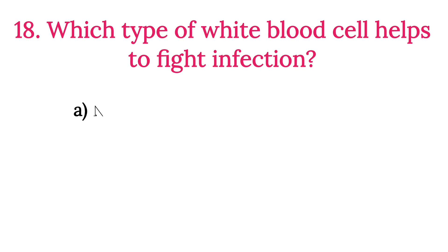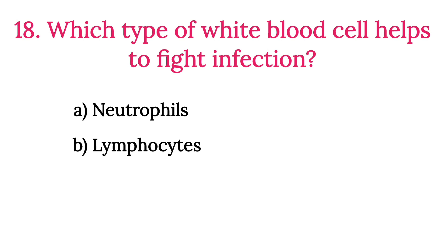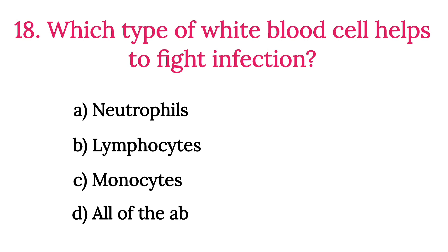MCQ Number 18: Which type of white blood cell helps to fight infection? Option A: Neutrophil. Option B: Lymphocyte. Option C: Monocyte. Option D: All of the above. The correct option is Option D, All of the above.